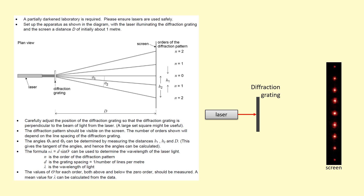You'll be given instructions for the diffraction grating practical as well. Start off by noting down the slit separation. Slit separation can be determined by using 1 over the number of lines per metre. Most often on the diffraction grating it gives you a number of lines per millimetre, in which case you divide 1 by the number of lines per millimetre and then divide by 1000 to get your distance in metres between each slit — it's going to be a very small distance.